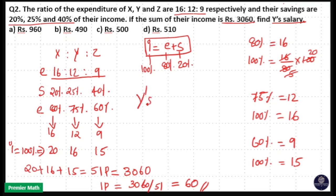So Y's salary is equal to 16 parts. That means 16 into 1 part is equal to 60. So 16 into 6 is 6, 6 are 36. 6 into 1, 6 plus 3, 9. So 960 will be your answer. So option A is your answer.